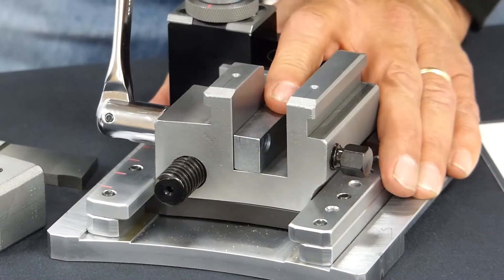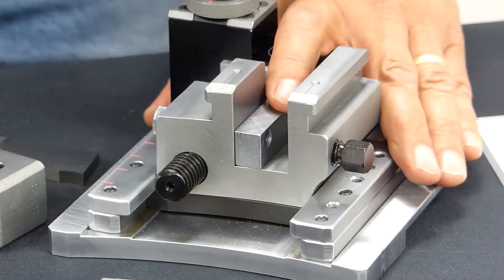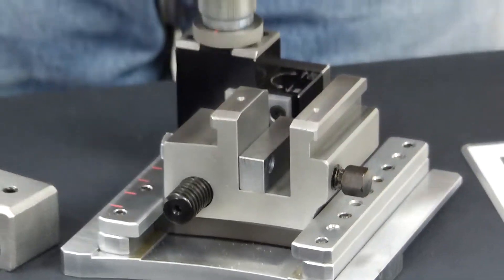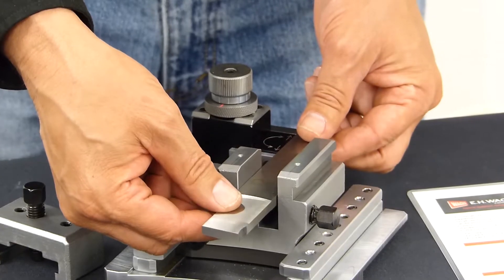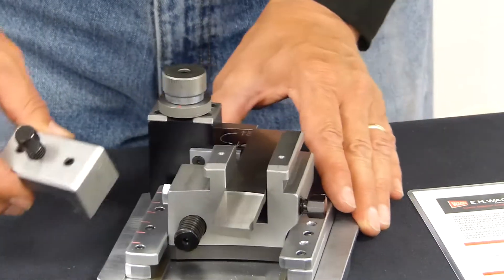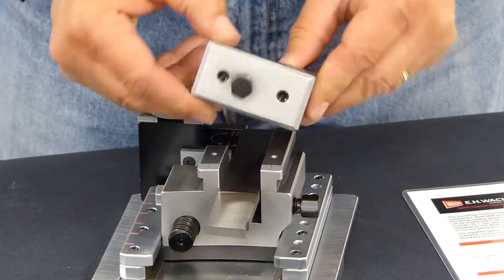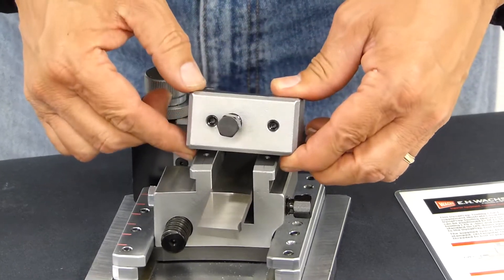Secured with the screw. Place the parting blade into the slide. And again, make sure that your screw is over the support.